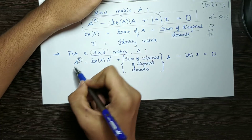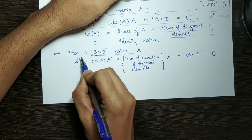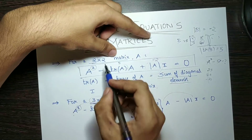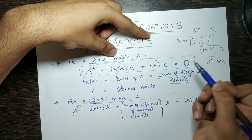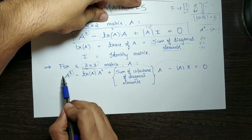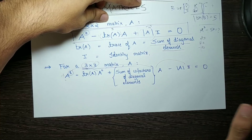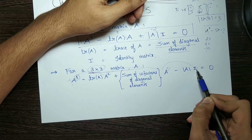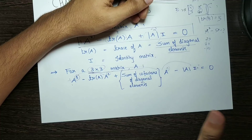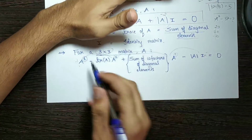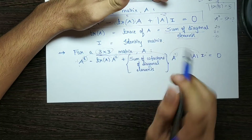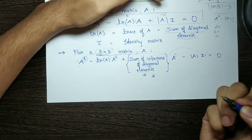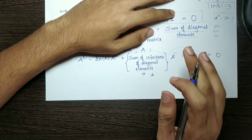In the case of a 3x3 matrix, A to the power 3 is the highest term. The characteristic equation is: A cubed minus trace of A into A squared, then the next term with power 1, then power 0. The signs alternate: plus, minus, plus, minus. So the powers go 3, 2, 1, 0. The characteristic equation for 3x3 will be different from 2x2. Minus trace of A into A squared is the same, but the next coefficient involves the sum of cofactors of diagonal elements. This is a very important point.